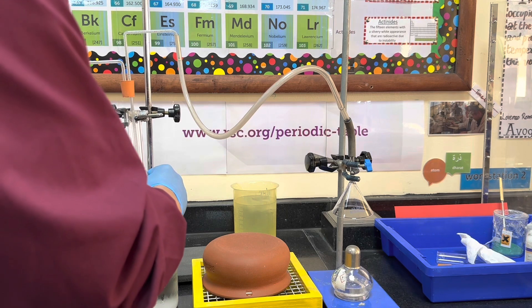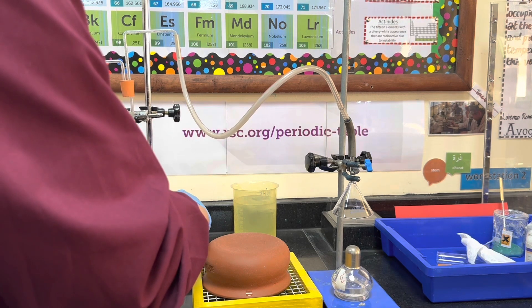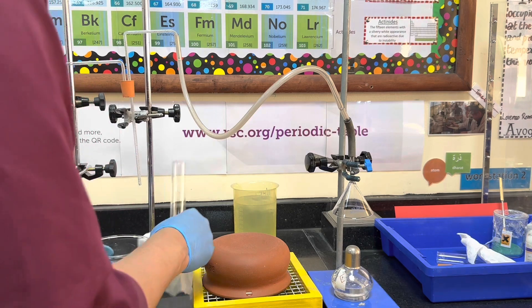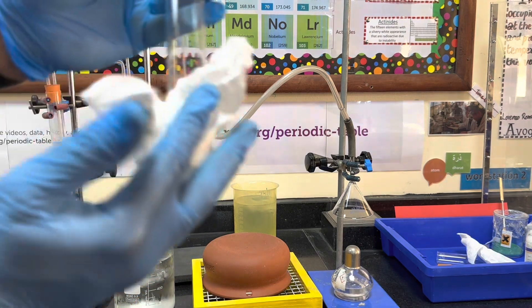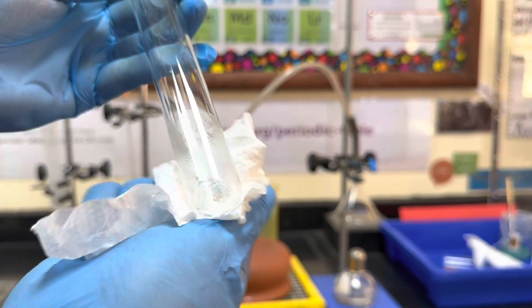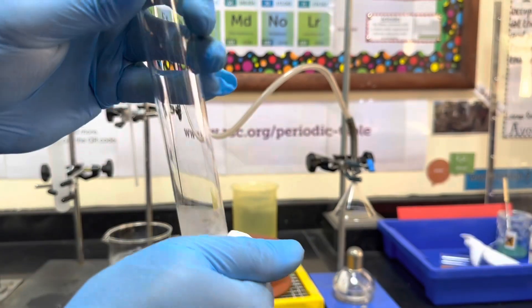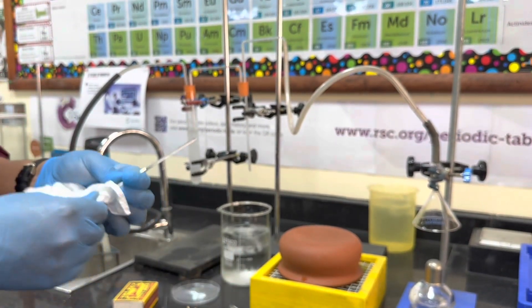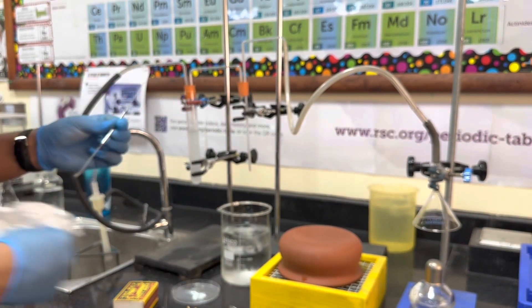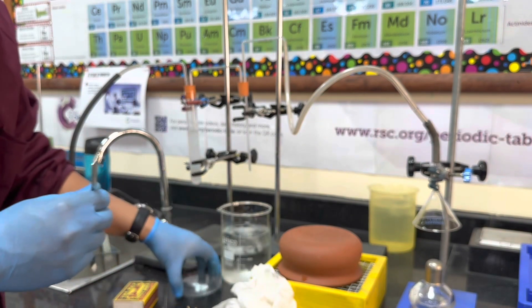We will then use the anhydrous copper(II) sulfate to confirm the presence of water. The anhydrous copper(II) sulfate will turn from white to blue. So here you can see that there's condensation on the inside.